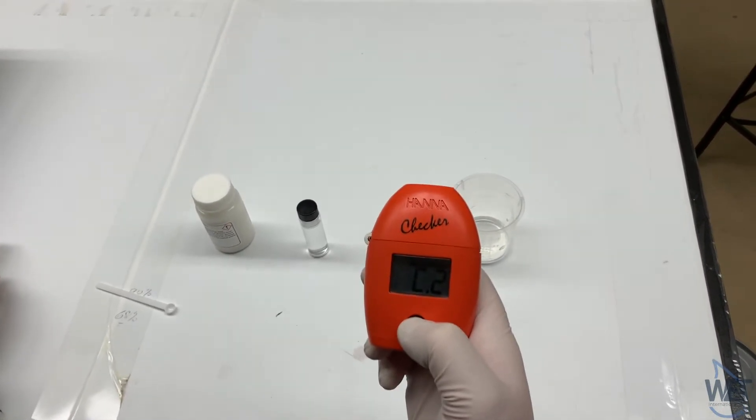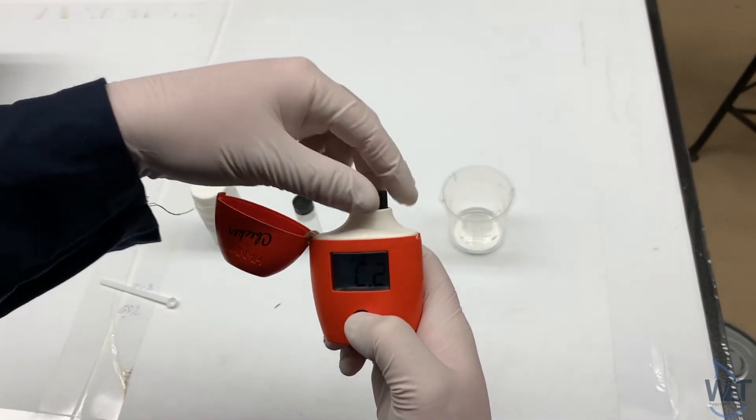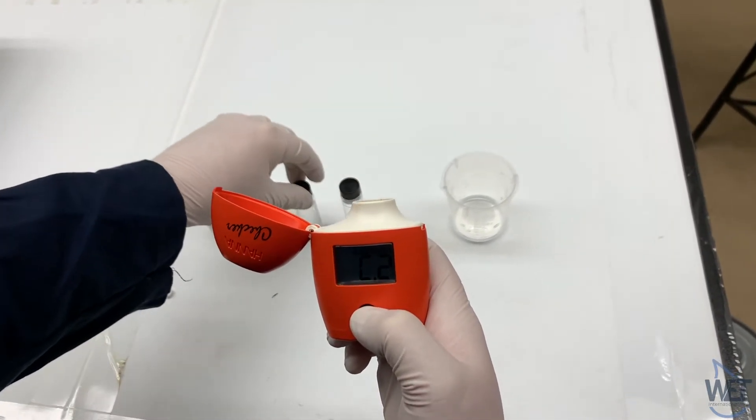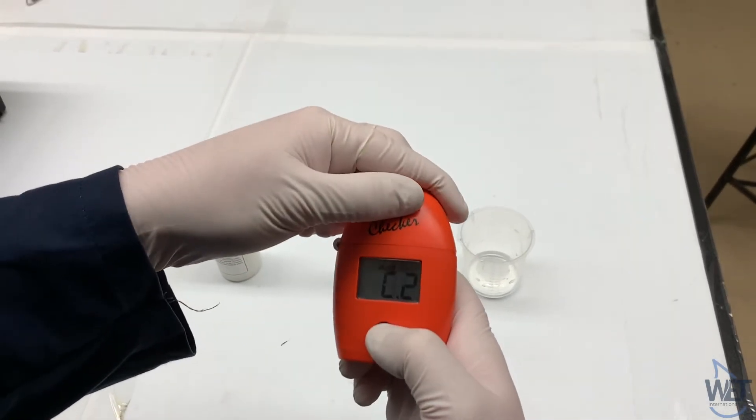When C2 comes up, you'll know that the colorimeter is zeroed out. You can then insert your sample and press the black button to take a reading.